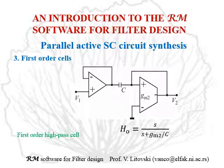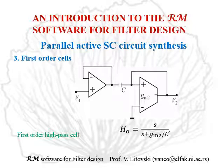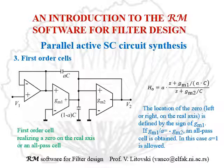Next, we have the high-pass cell which, since the capacitor is in the series branch at the input, has to be isolated so it will not load the preceding cells in the cascade. Here is the first-order cell realizing a zero at the real axis or an all-pass cell. The location of the zero on the right-hand side of the real axis is defined by the sign of GM1. If GM1/A is equal to minus GM2, an all-pass cell is obtained. In that case, A equals 1 is allowed, which means the bottom capacitor will be removed.